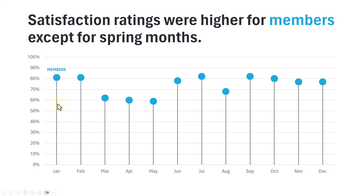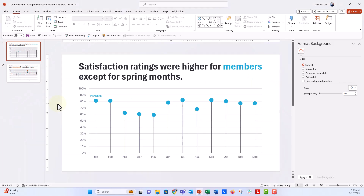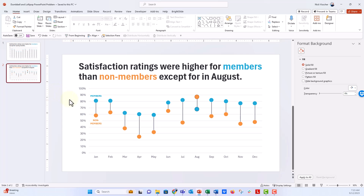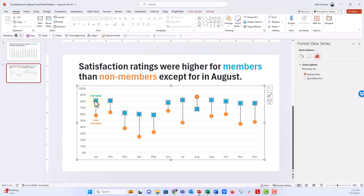So use those error bars instead of the drop lines. Now another issue we've had is with vertical dumbbells — this is a really great chart type. It shows the difference between members and non-members and their satisfaction ratings over the course of the year every single month. You can see that members were higher than non-members just about all year long, except for in August when they swapped.